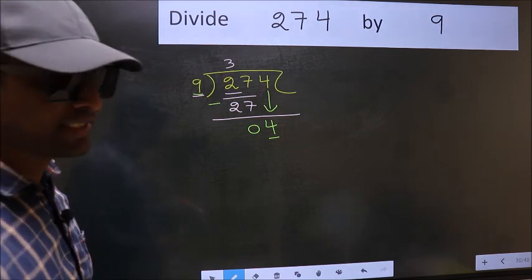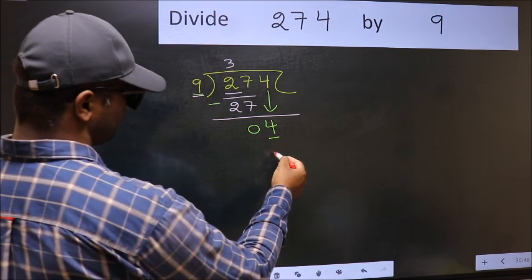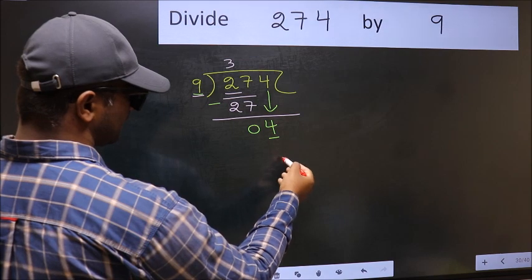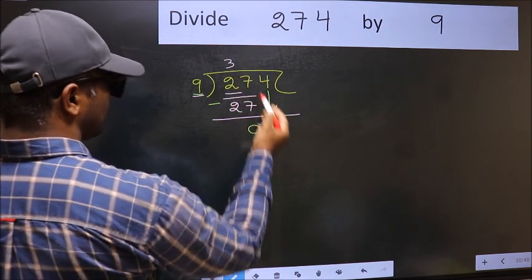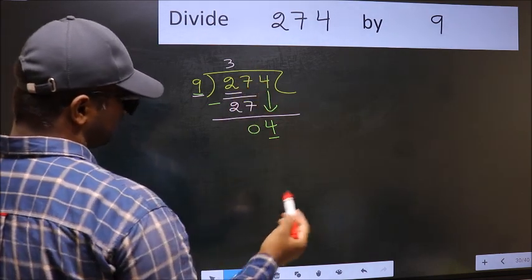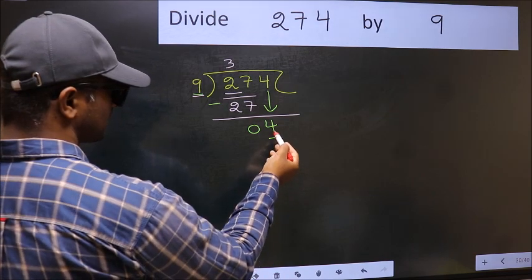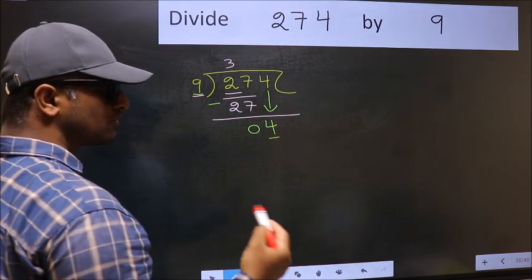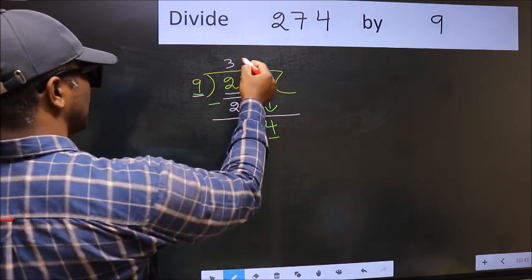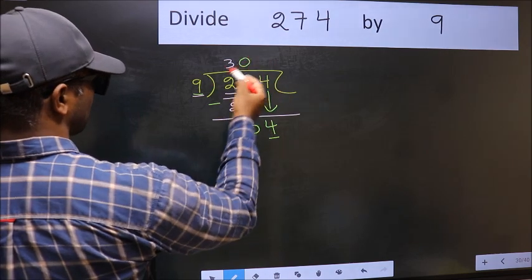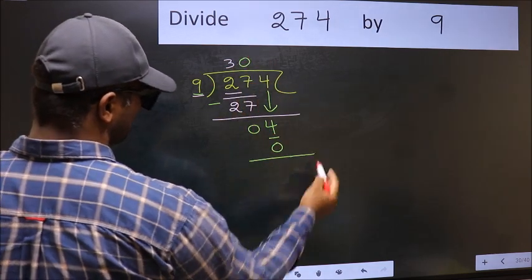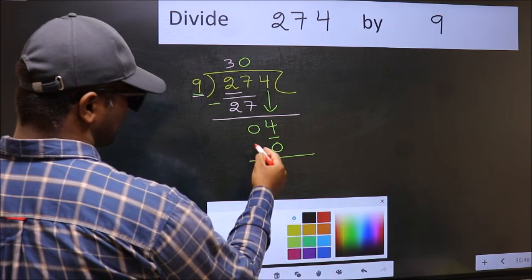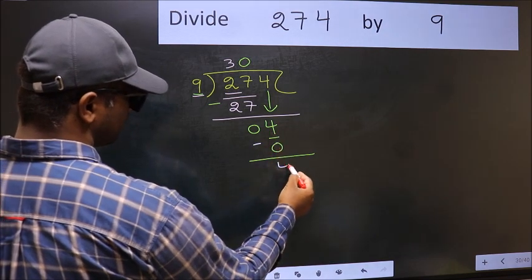Instead, what you should think of doing is, which number should we take here? If I take 1, we will get 9. But 9 is larger than 4. So what we should do is we should take 0. So 9 into 0, 0. Now we should subtract. 4 minus 0, 4.